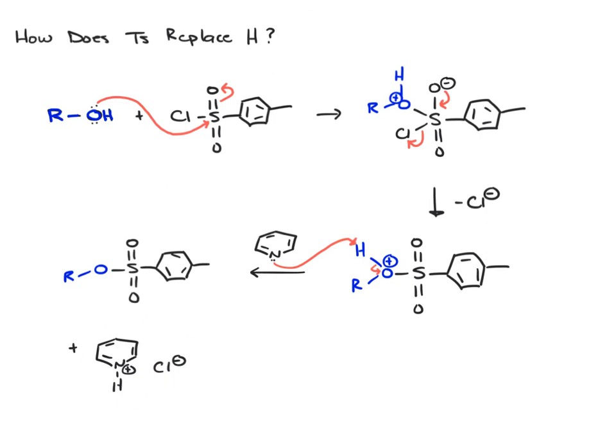You end up with your tosylated oxygen plus protonated pyridine, which pairs with the chloride ion to give a salt. This large structure I've drawn is really just the R-O-Ts.